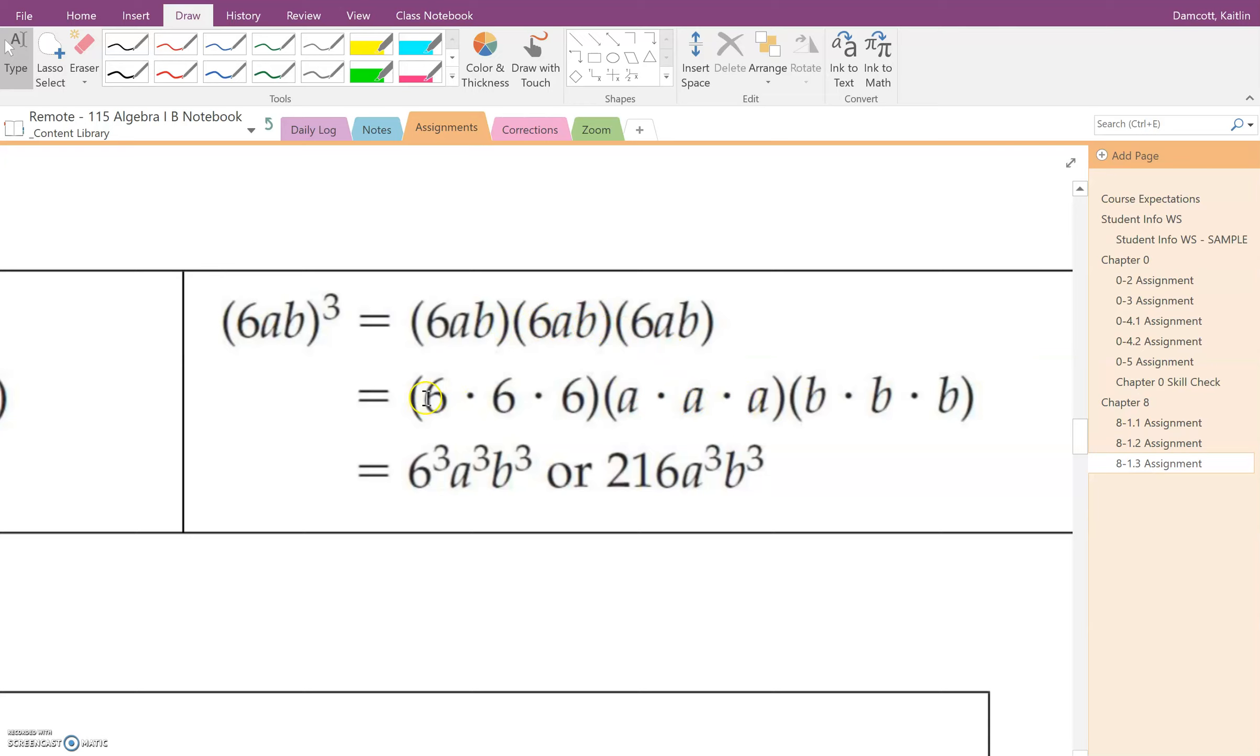So this can be rewritten as you have three factors of 6, so you can write that as 6 to the third power. You have 1, 2, 3 factors of A, so that's A to the third power. And then you have three factors of B. So that's B to the third.